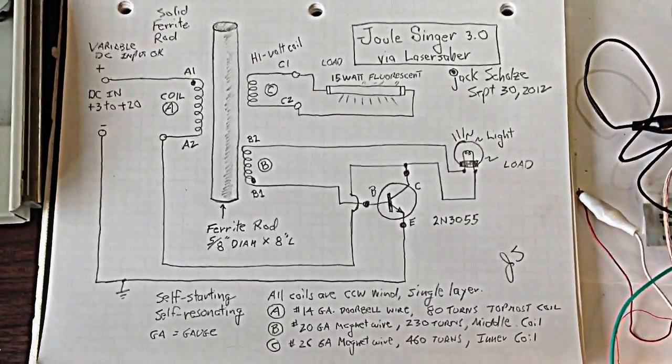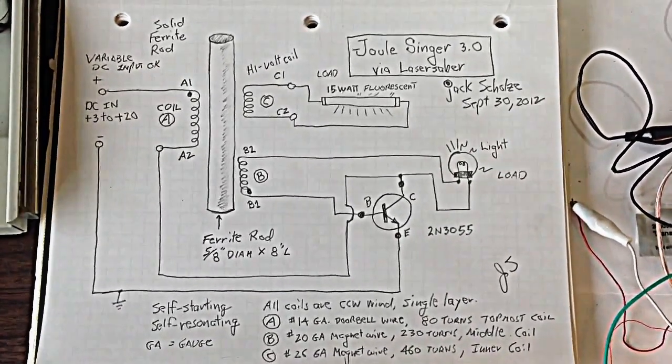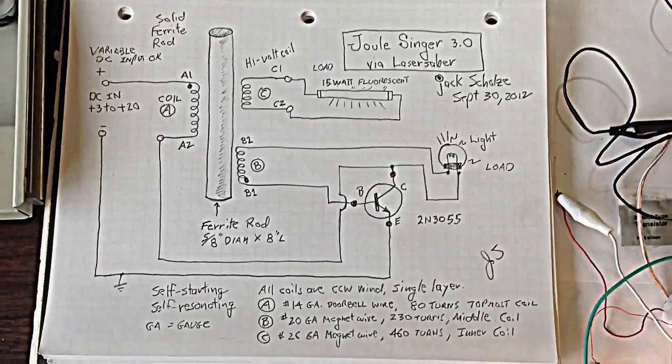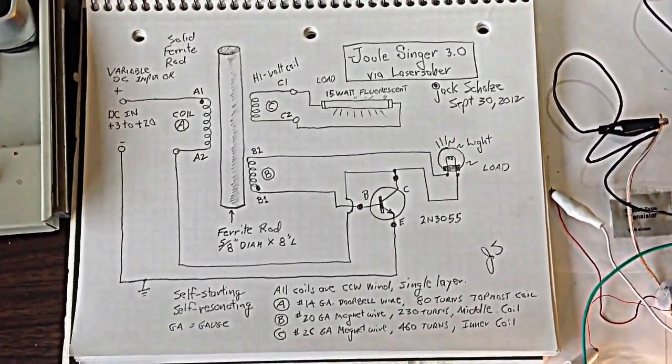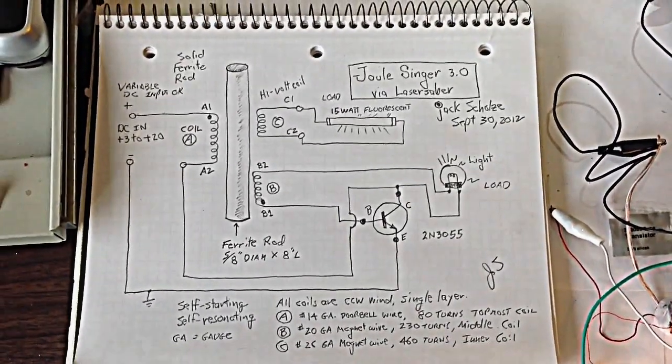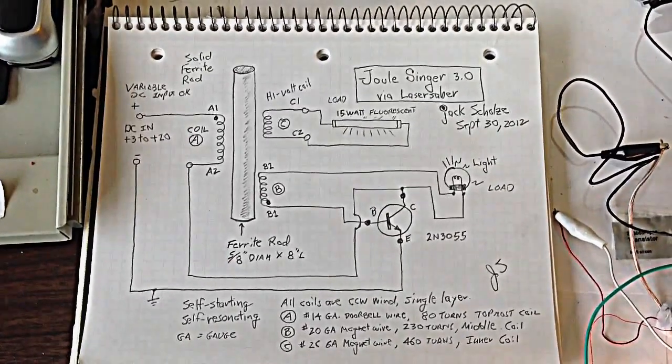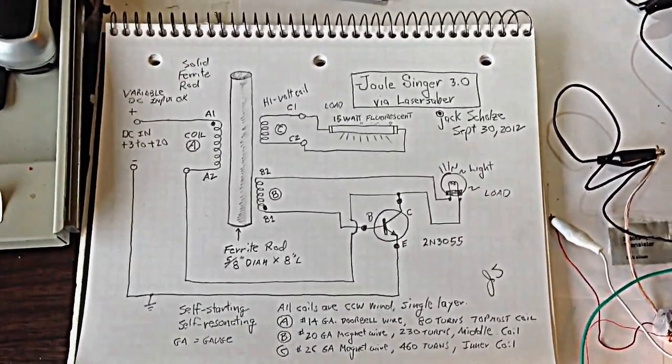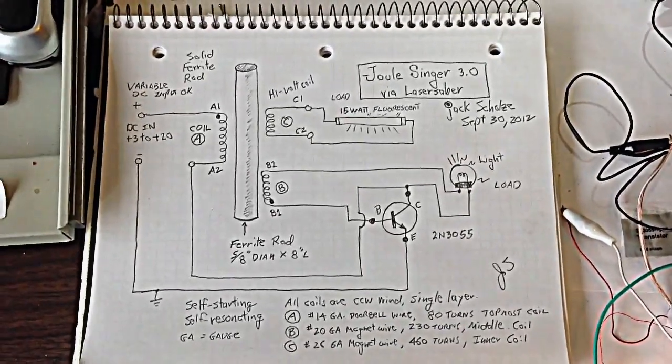It's a ferrite rod, 5/8-inch diameter, 8 inches long, and there's three coils with a single layer for each coil. Coil A is 14-gauge, that's the topmost one. All of the coils are single layer, just once counterclockwise wound, just one layer of wire for the entire length, 7 inches or so, of the ferrite rod.